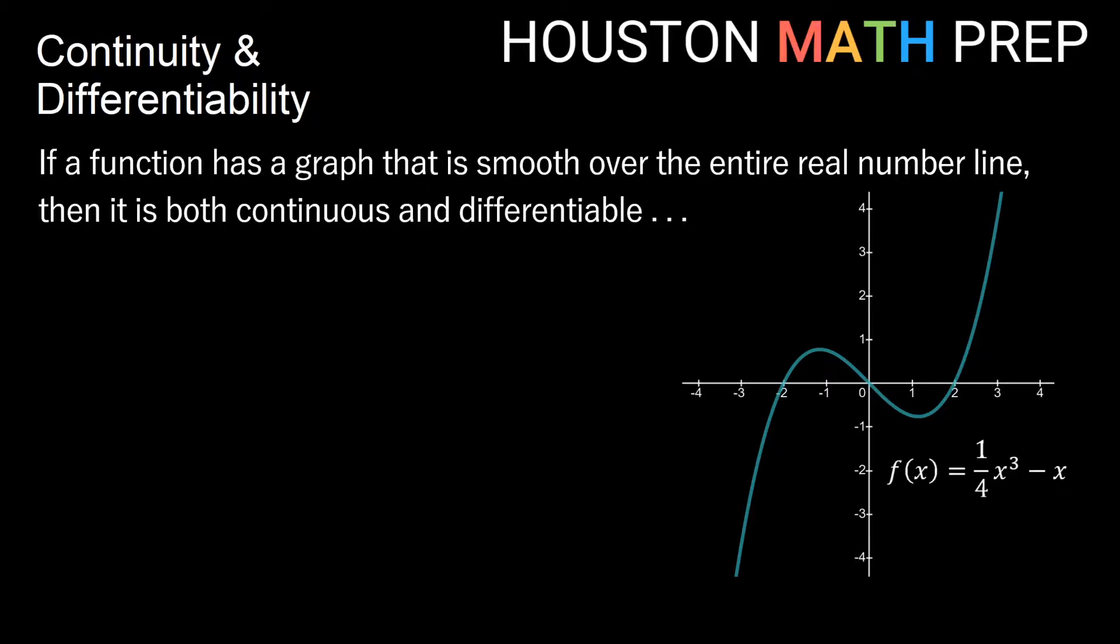If a function has a graph that's smooth over the entire real number line, then it is both continuous and differentiable. I should be able to find, at this point that is smooth, the slope of a tangent line. It's also continuous, meaning that the graph is connected at that point. There's no break in the graph.